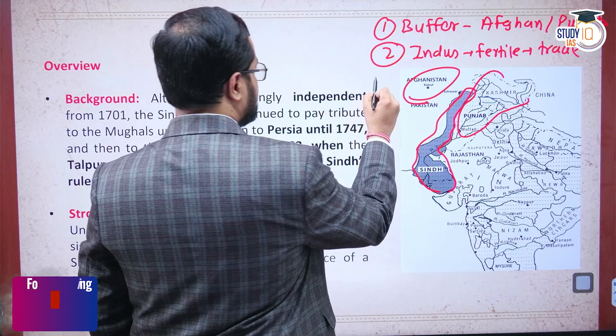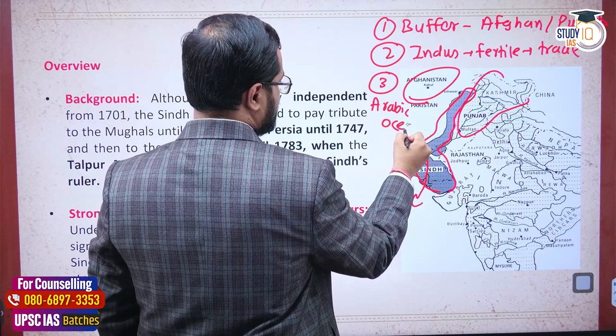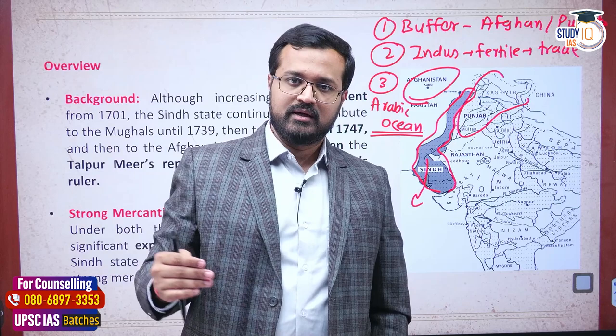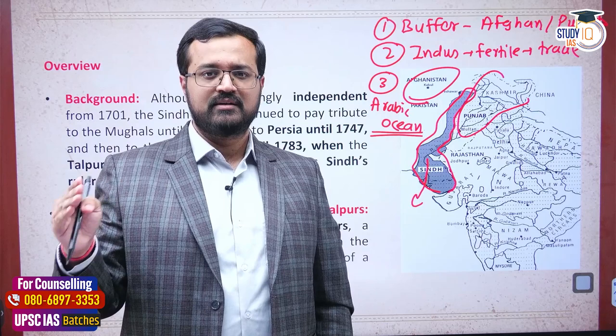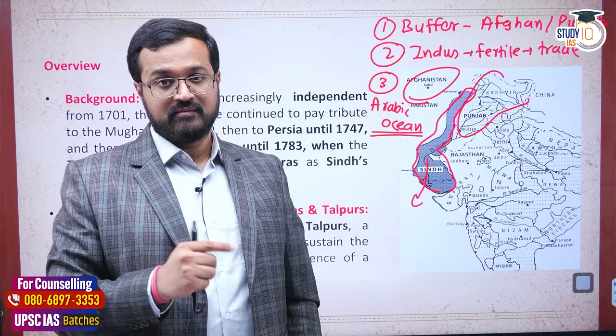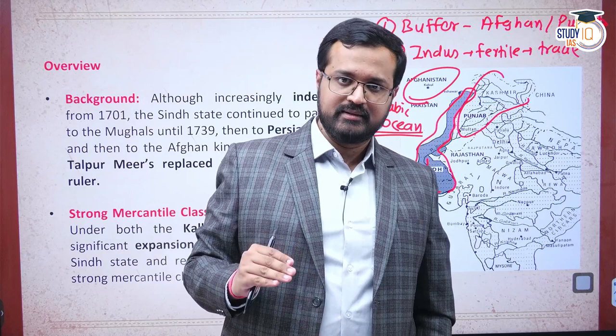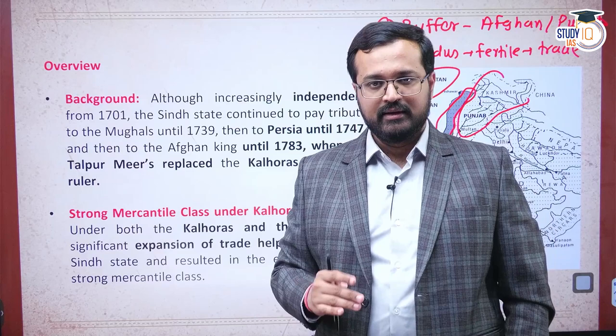The third important aspect is its strategic significance - Sindh has a direct outlet to the Arabian Ocean, giving direct access to the sea. It controls a major part of the Sindhu River - that's why it is called Sindh. It also acts as a buffer state between Punjab and Afghanistan. Since Britishers were heavily interested in Afghanistan, naturally they were also going to be interested in Sindh.